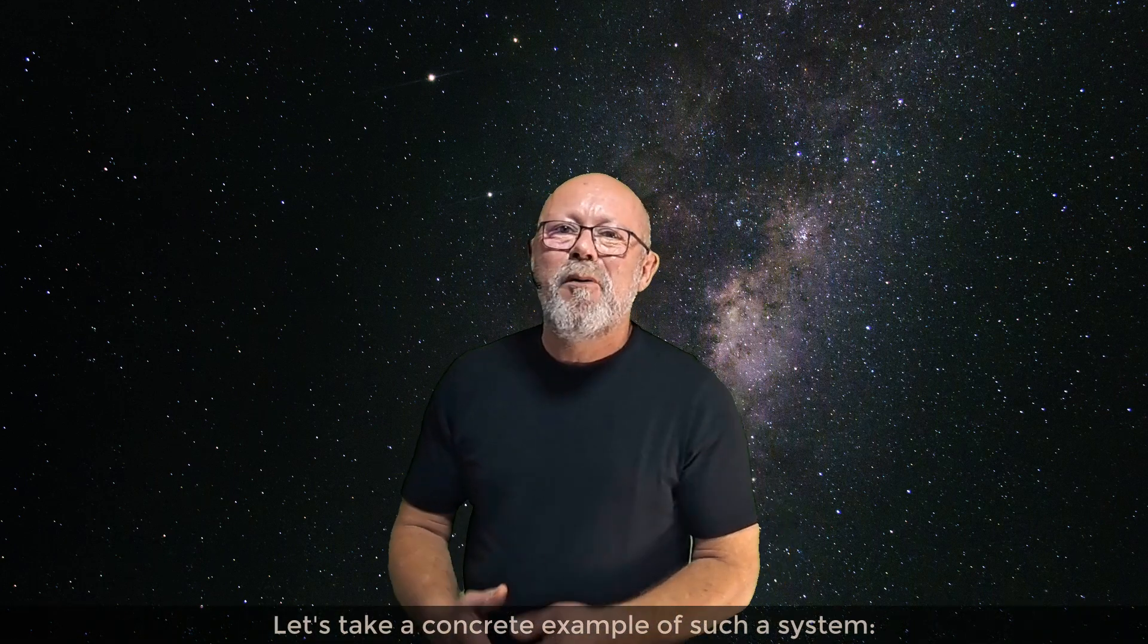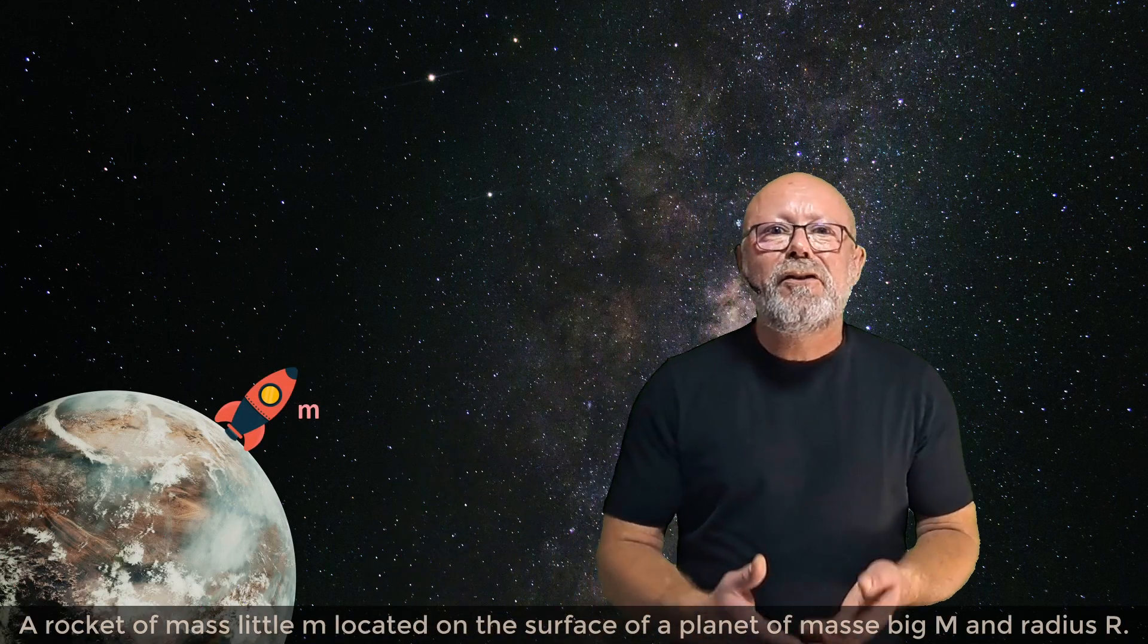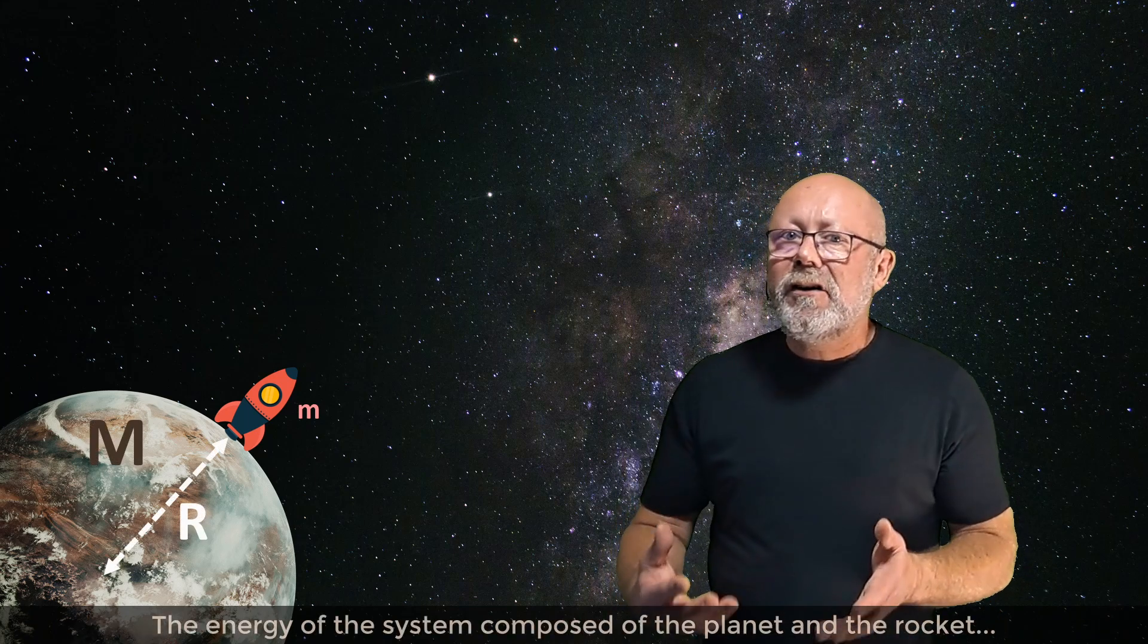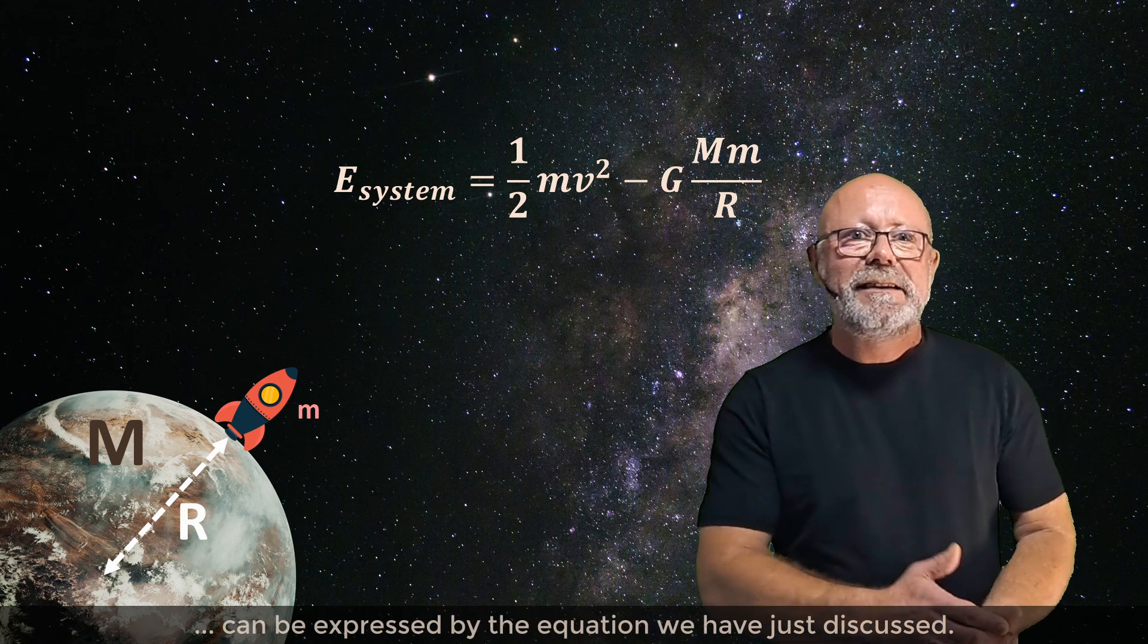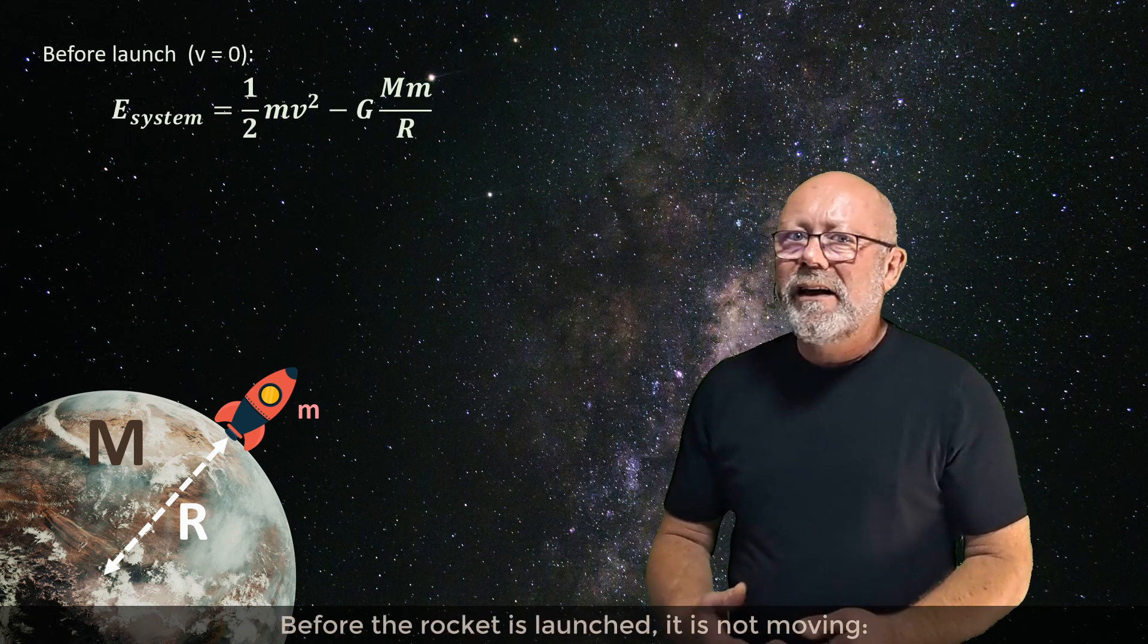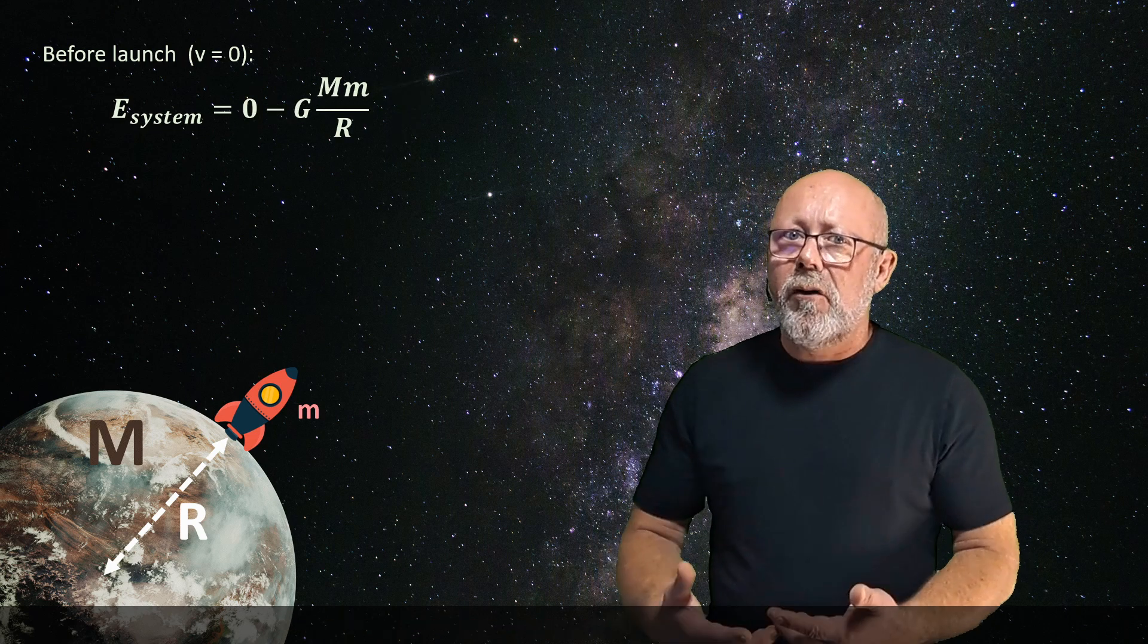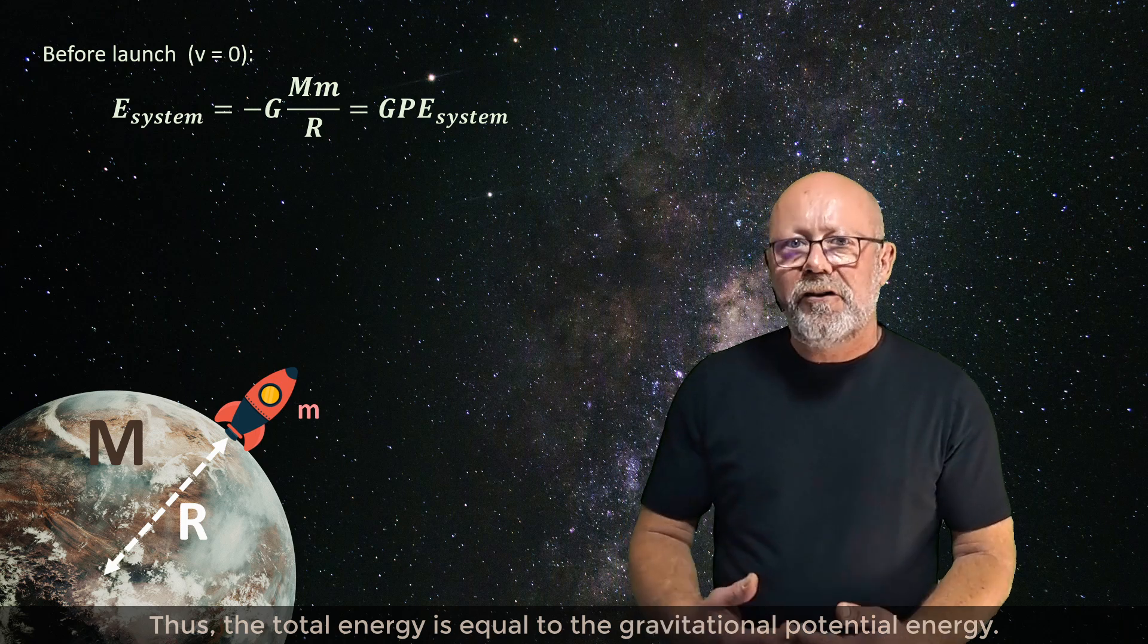Let's take a concrete example of such a system: a rocket of mass little m, located on the surface of a planet of mass big M and radius r. The energy of the system composed of the planet and the rocket can be expressed by the equation we have just discussed. Before the rocket is launched, it is not moving. The kinetic energy of the system is zero. Thus, the total energy is equal to the gravitational potential energy.